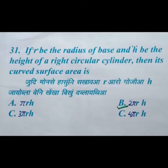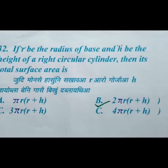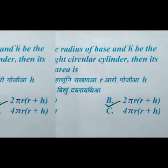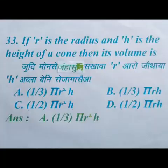the right answer is option B: 2 pi r h. If R is the radius of the base and H is the height of a right circular cylinder, then its total surface area — we have four options and the right answer is option B: 2 pi r (r plus H).